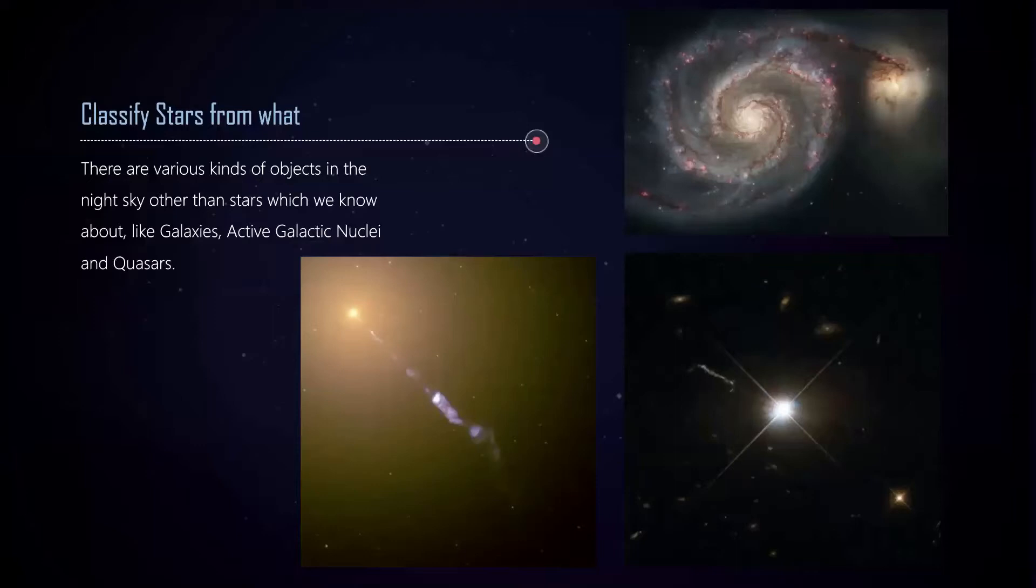First, we need to know why we need to classify stars and from what. There are different galaxy clusters, but they all contain galaxies. Compared to stars, we have galaxies, active galactic nuclei, and quasars, which we try to separate out so we can study them more. These objects are much, much bigger than stars because they are made up of stars, but because they're so far away from us, they seem so small.